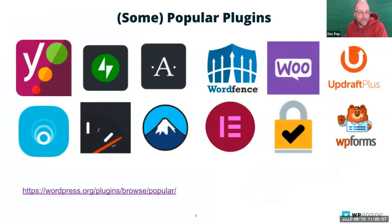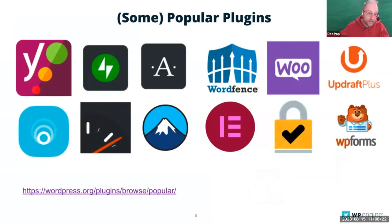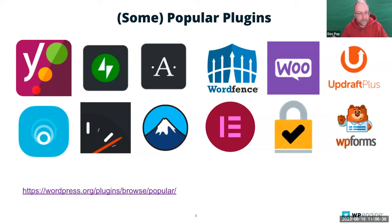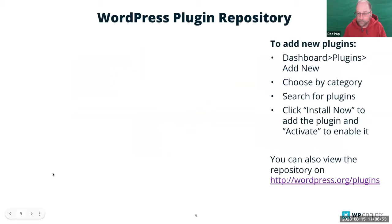Here we have some examples of popular plugins you can find on WordPress.org/plugins — these are the 12 most popular plugins currently in the store. You've got things like Yoast, Akismet, and Jetpack. What a plugin does for WordPress is it adds new flavors and new possibilities to your site. You can turn your site into an e-commerce site by installing WooCommerce, improve your SEO with Yoast SEO, or reduce spam with Akismet. We'll also talk later about how to find plugins beyond just the popular ones.